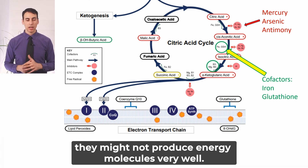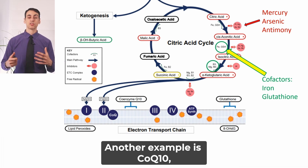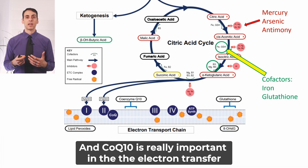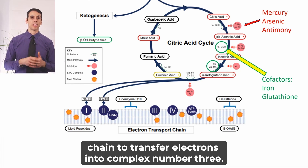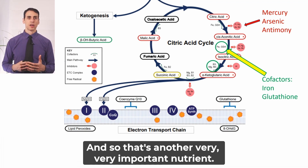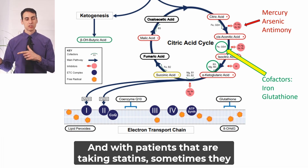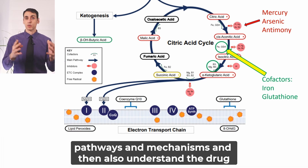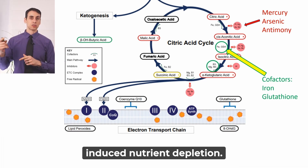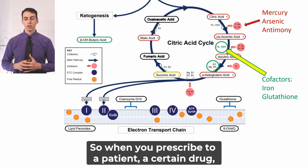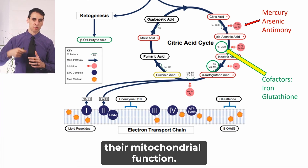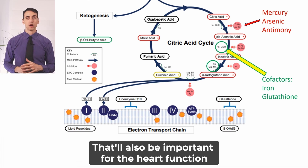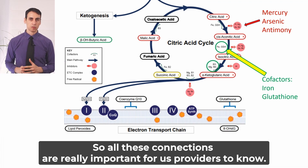CoQ10 production is blocked or inhibited by some statin medications. CoQ10 is really important in the electron transfer chain — it transfers electrons into complex number three. Patients taking statins sometimes have lower amounts of CoQ10 because of that medication side effect. This is why it's helpful to understand those pathways and mechanisms, and also to understand drug-induced nutrient depletion. When you prescribe a certain drug, you should also understand how it would impact mitochondrial function, which is important for brain function, cardiovascular health, and heart function.